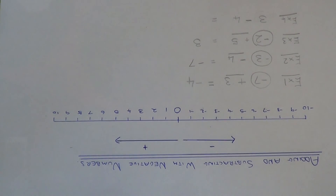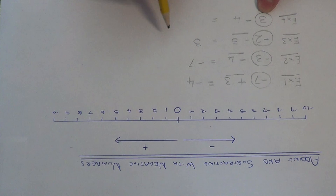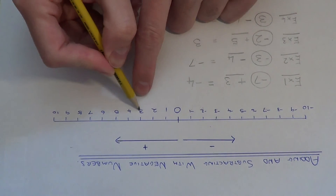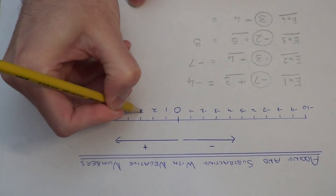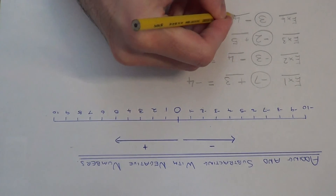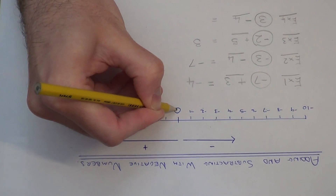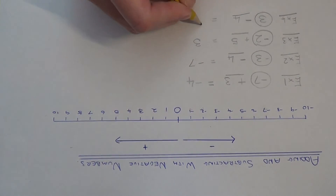Our final example is three take away four. So this time we are starting on plus three — not minus three. Plus three is here on the number line. And what we are doing is taking away four, so this means we need to move four places to the left: one, two, three, four. And we end up on minus one.